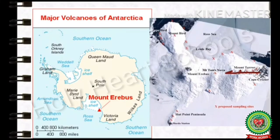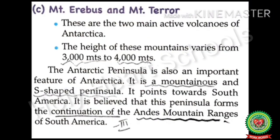Mount Erebus and Mount Terror are the two main active volcanoes of Antarctica. Active volcanoes are those that have a recent history of eruption and are likely to erupt again. The height of these mountains varies from 3,000 meters to 4,000 meters.